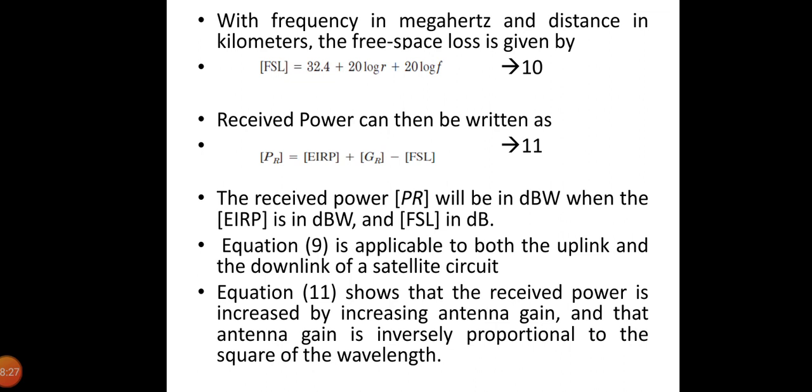Therefore the received power can be written as P_R equals EIRP plus G_R minus FSL. The received power will be in dBW where EIRP will be in dBW and FSL will be in dB. This equation is applicable to both uplink and downlink of a satellite circuit.